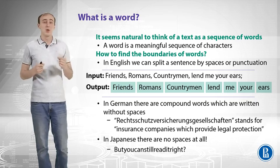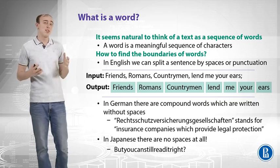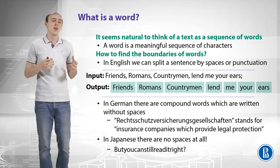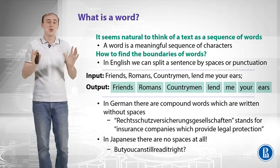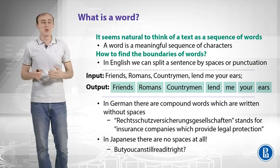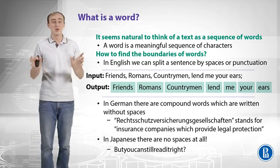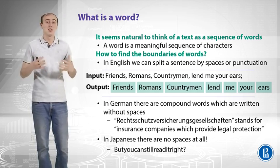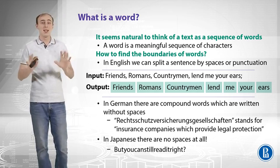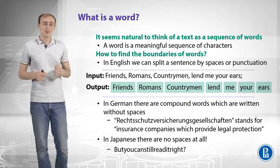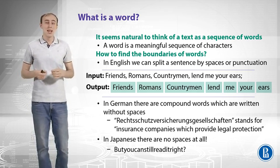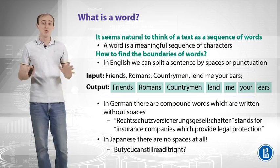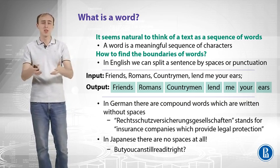Let's start with words and define what a word is. It seems natural to think of text as a sequence of words, where a word is a meaningful sequence of characters. In English, it is usually easy to find word boundaries because we can split a sentence by spaces or punctuation, and what remains are words. For example: 'Friends, Romans, countrymen, lend me your ears.' Splitting on commas, semicolons, and spaces gives us the words: friends, Romans, countrymen, and so forth.